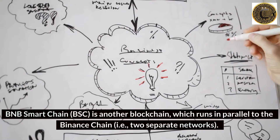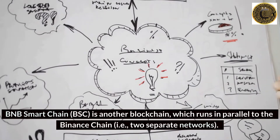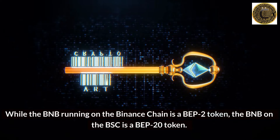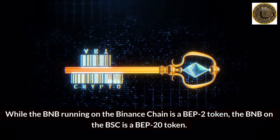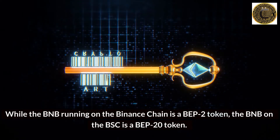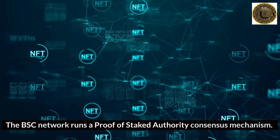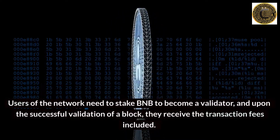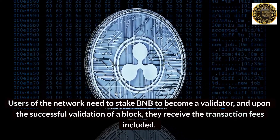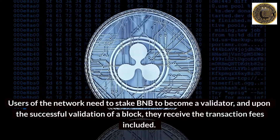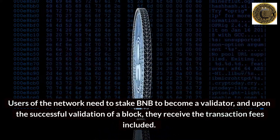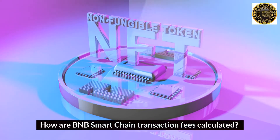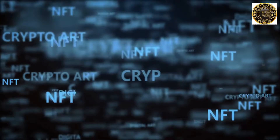BNB Smart Chain (BSC) is another blockchain which runs in parallel to Binance Chain — two separate networks. While the BNB running on Binance Chain is a BEP2 token, the BNB on BSC is a BEP20 token. The BSC network runs a Proof of Staked Authority consensus mechanism. Users of the network need to stake BNB to become a validator, and upon the successful validation of a block, they receive the transaction fees included.